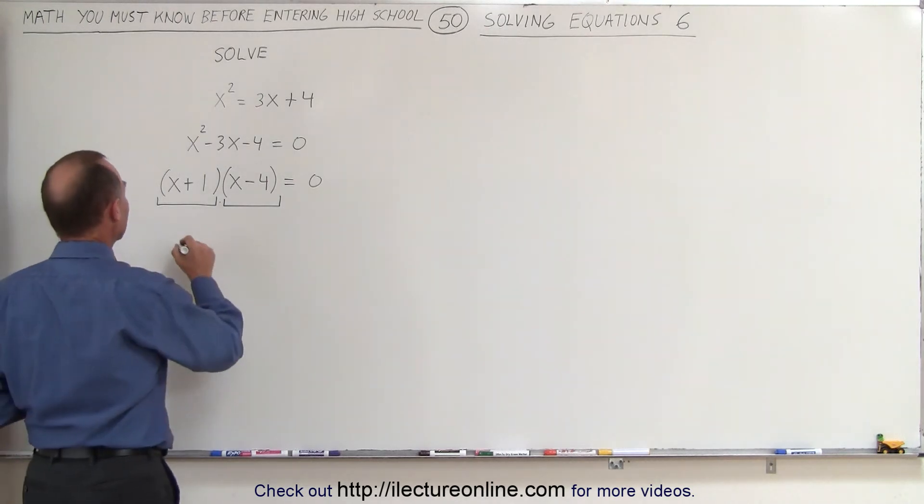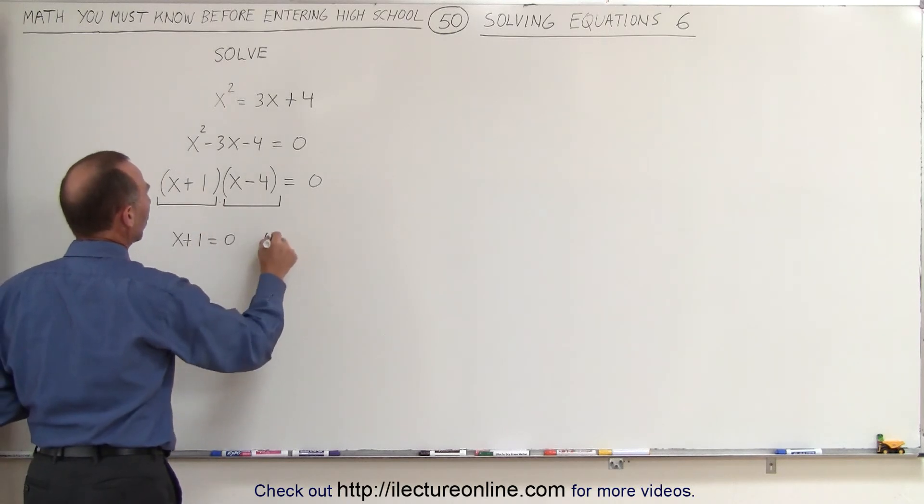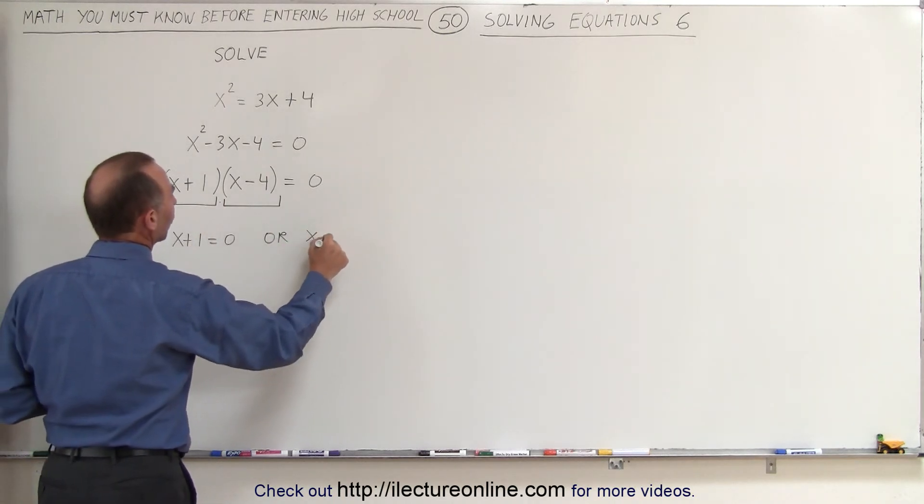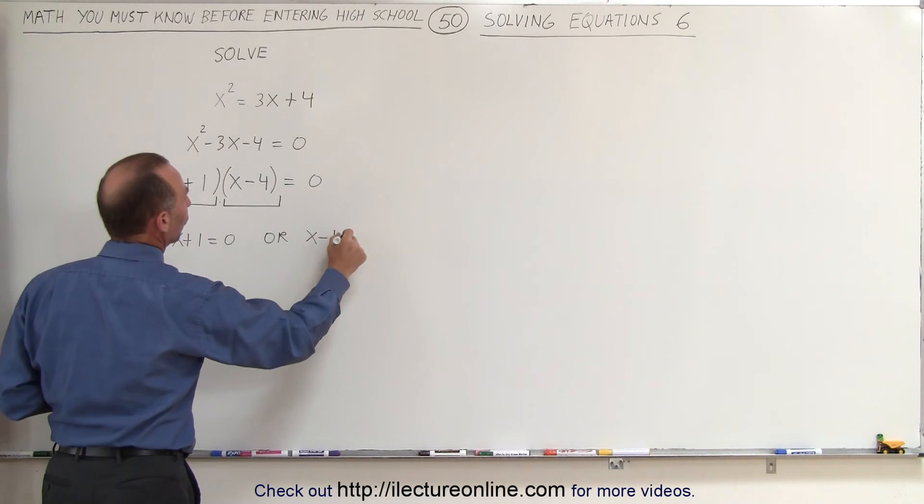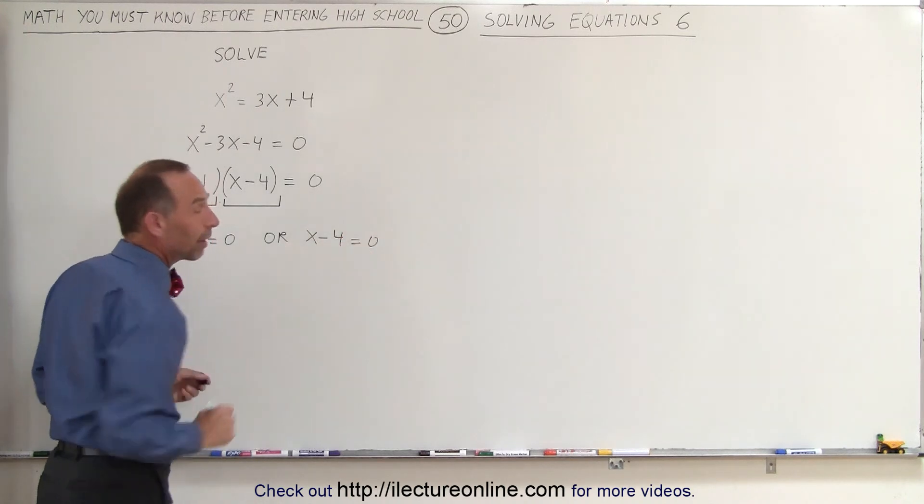In other words, either x plus 1 must equal zero or x minus 4 must equal zero. That's the only possibilities.